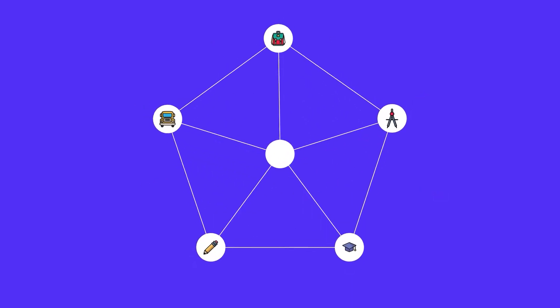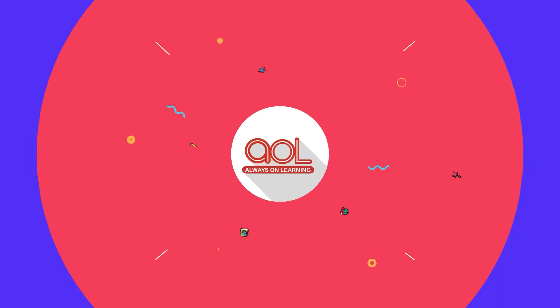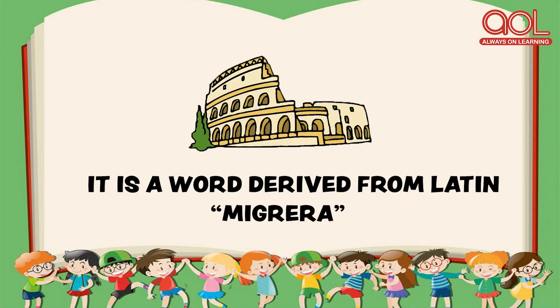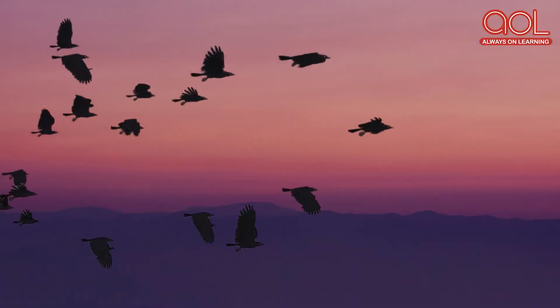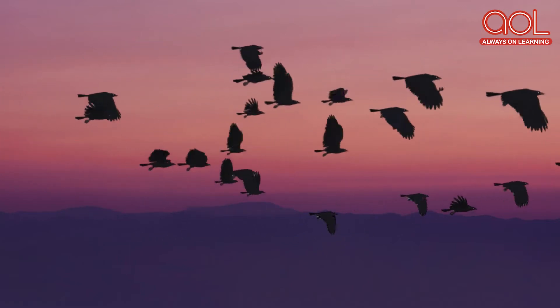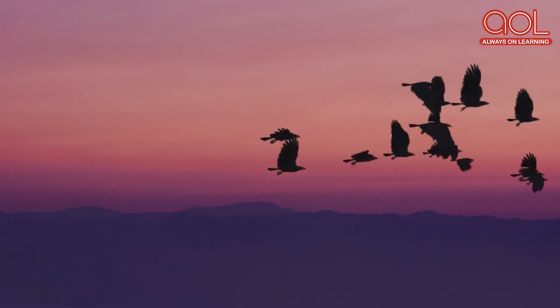Before we understand migration in birds, we have to understand the meaning of migration. It is a word derived from Latin, 'migrare', which means movement from one place to another place. If we take the migration in birds, it means that a group of birds traveling from one place to another place — that's called migration in birds.